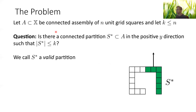We let A be a connected assembly of n unit grid squares. We also let some integer k ≤ n. Our question is: is there a connected partition S* in the positive y direction such that |S*| ≤ k? This would be an example for S*, assuming k is large enough. We call S* a valid partition — meaning a connected partition where we move the subset S* in the positive y direction.